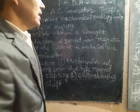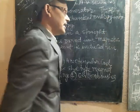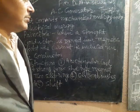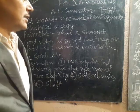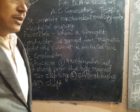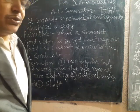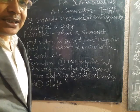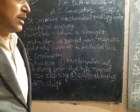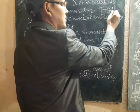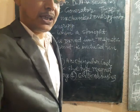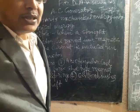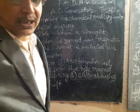In both cases — left hand rule and right hand rule — what you will observe is the letter M is written on the thumb, so it shows motion. First finger shows field (FF means field), and in all cases the another finger shows current.